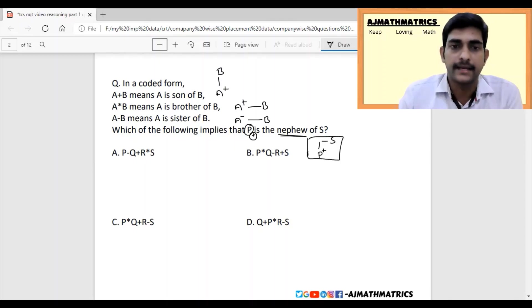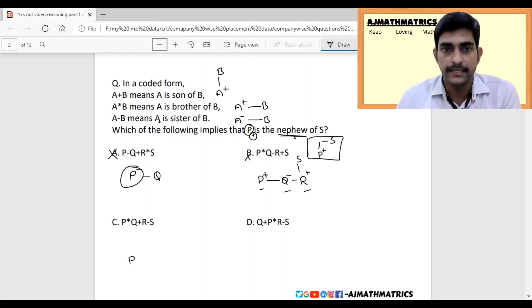Let's check option A. P minus Q means P is the sister of Q. If P is the sister of Q, P is female, so this cannot be the answer because P must be male. Option B: P star Q means P is the brother of Q. Q minus R means Q is the sister of R, and R plus S means R is the son of S. By this diagram, P, Q, R are the children of S, so nephew is not possible.